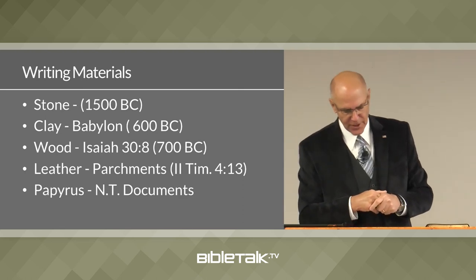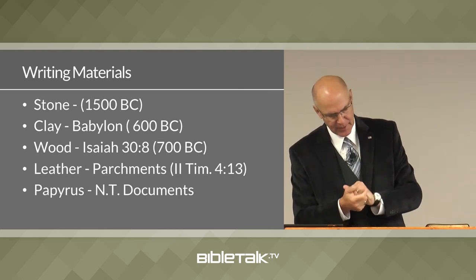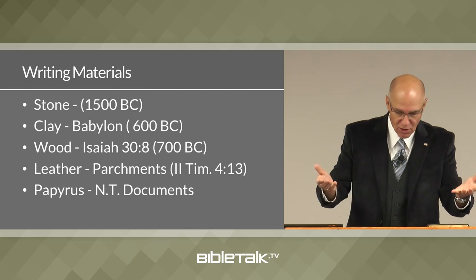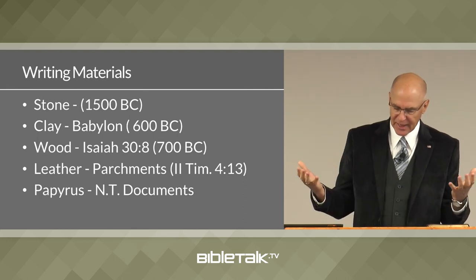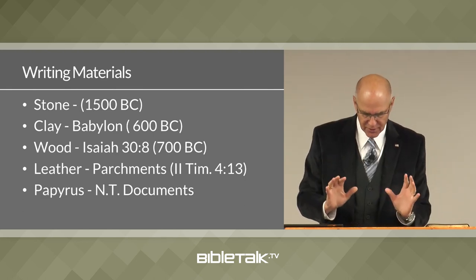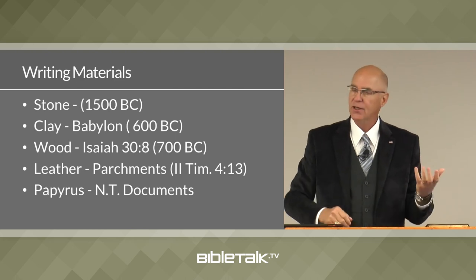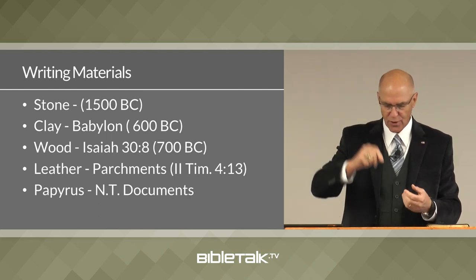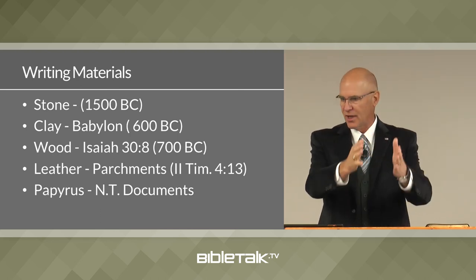First we begin with stone — 1,500 BC — the earliest writing material. The Ten Commandments, right? They were on stone tablets, which matches archaeological discoveries of the era. Then came clay in Assyria and Babylonia, used as their main writing material. Large libraries have been discovered containing clay tablets. In Ezekiel chapter 4 verse 1 — Ezekiel living about 600 years before Christ — God tells Ezekiel to write on a brick or tablet. Again, the Bible is in sync with the history of writing.